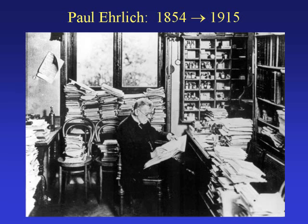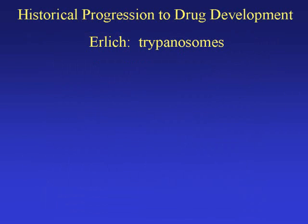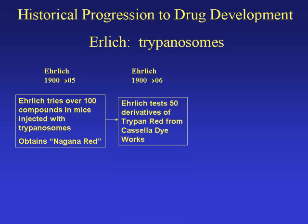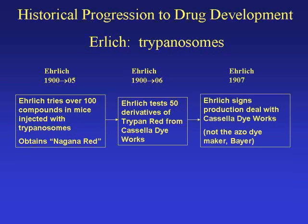You may decide for yourself if Ehrlich's procedures were justified. Onto Ehrlich's work with trypanosomes, which caused sleeping sickness: in the early 1900s, Ehrlich tried over 100 compounds in mice injected with trypanosomes and found the somewhat effective compound trypan red. At this time Ehrlich also tested 50 derivatives of trypan red from Casella Dye Works in what we might call a structure-activity relationship study, or at least an early form of a SAR.